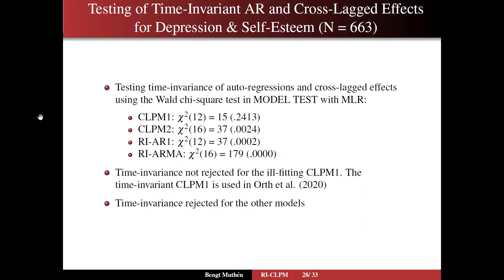Turning to slide 28, we're going to take a closer look at the testing of time invariance for the autoregressions and the cross-lagged effects. We stay with the example with five time points for depression and self-esteem. We can do that either by running the two models and doing a chi-square difference test. Since we're using MLR, we have to use those special computations shown on the M-plus website.